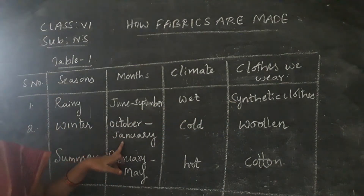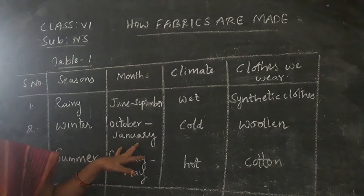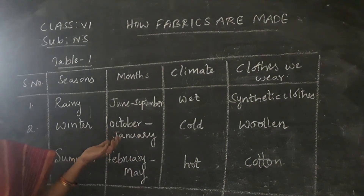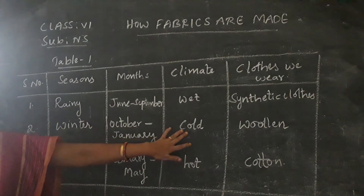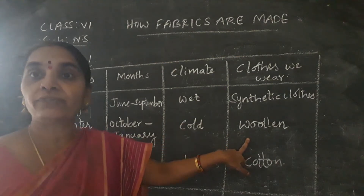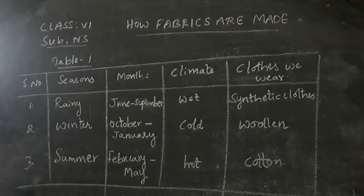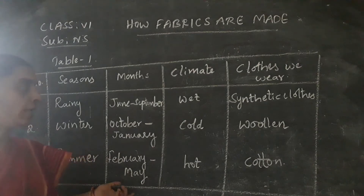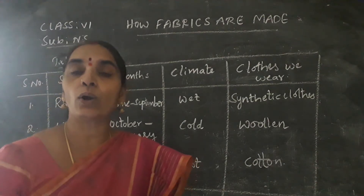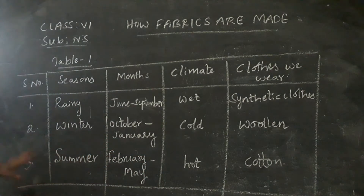Coming to the winter season, it is between October to January. We experience the winter season where the climate is very cold, and we prefer to wear woolen clothes. Coming to the summer season, we experience extreme hot climate during February to May, and we prefer to wear cotton clothes during this summer season.